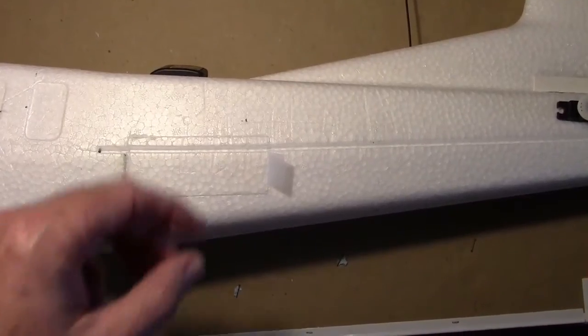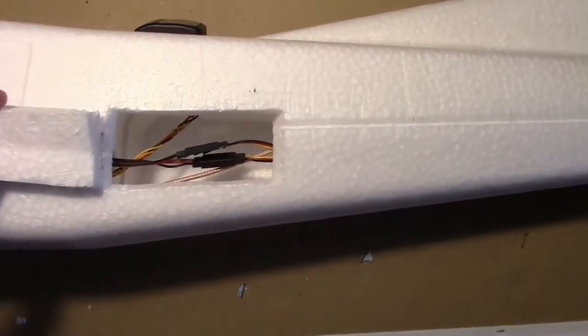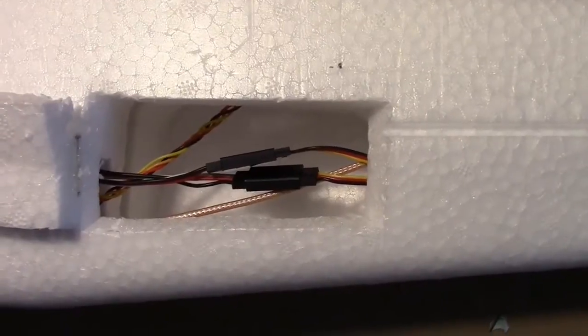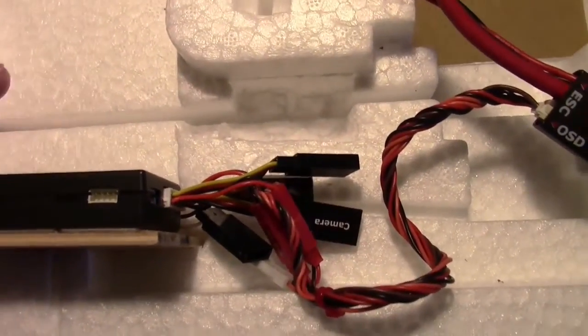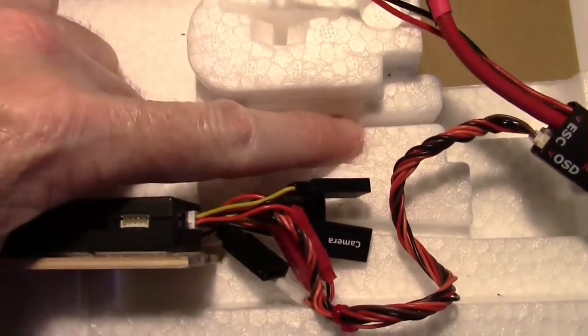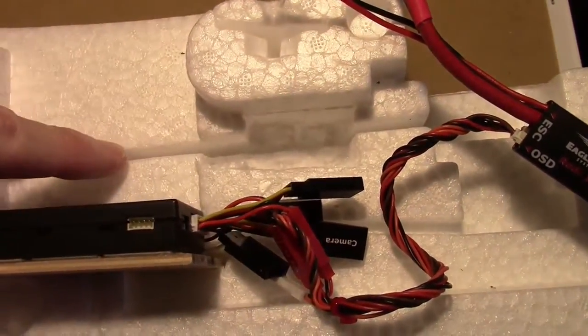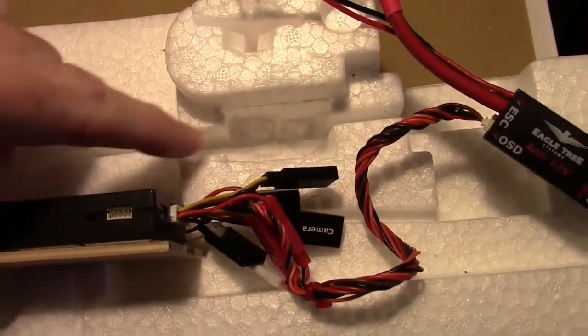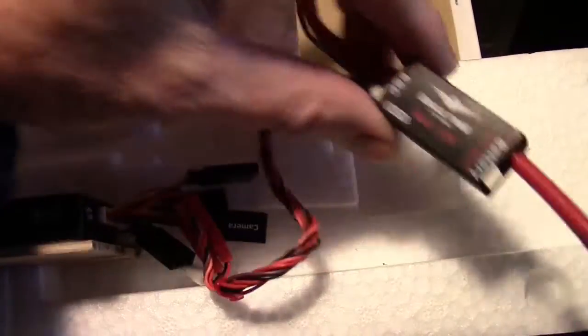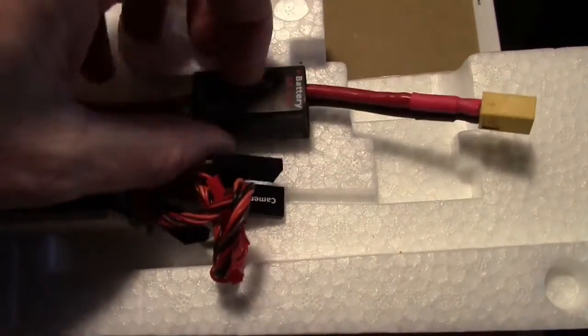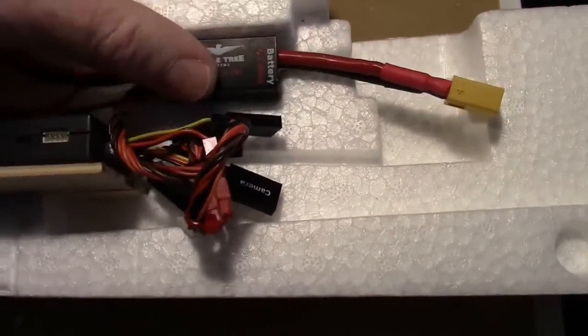I also added a third hatch on the other side of the fuselage so that I can get to the servo wire connections. Next is the power module, and what I've done is cut a little well down in the foam right here and made it deep enough so the power module will go in. I'm going to use these slots that are already here for the wires to slide into. So I'm going to put it right down in there like that.